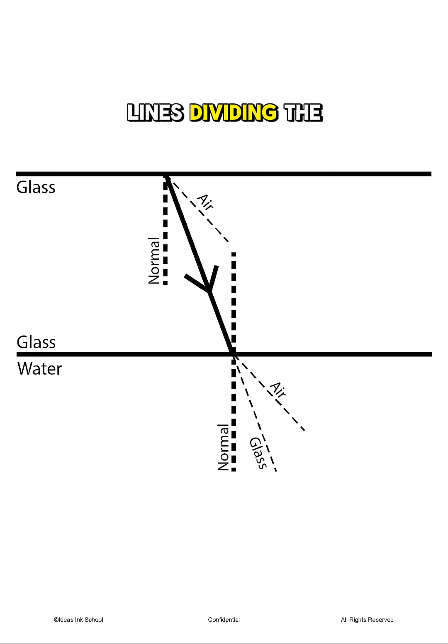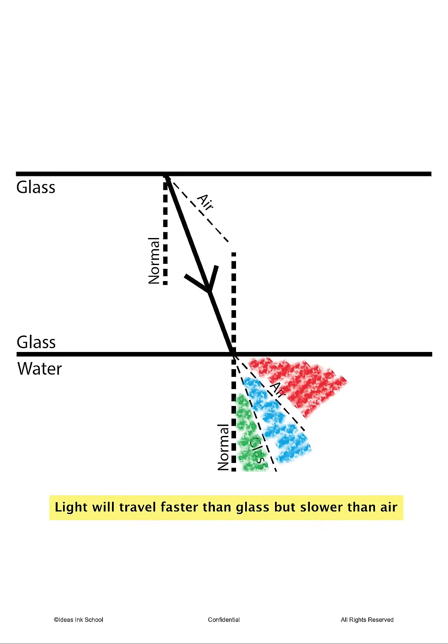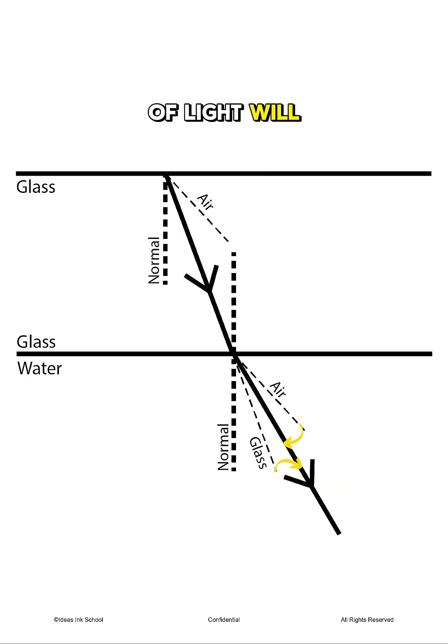Now we have two lines dividing the region into three sectors. Since light is traveling through water, which is a medium that is less dense than glass but at the same time denser than air, the relative speed of light will be faster than that of glass but slower as compared to air.